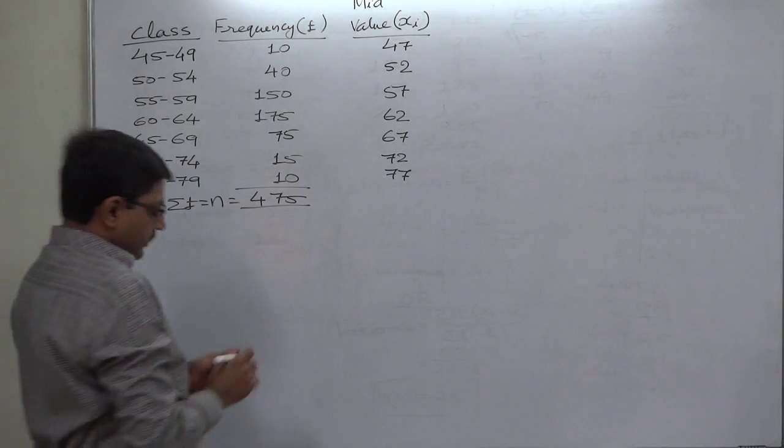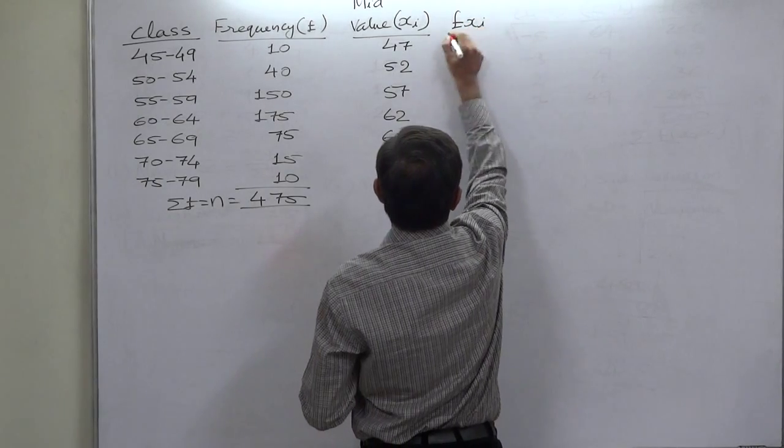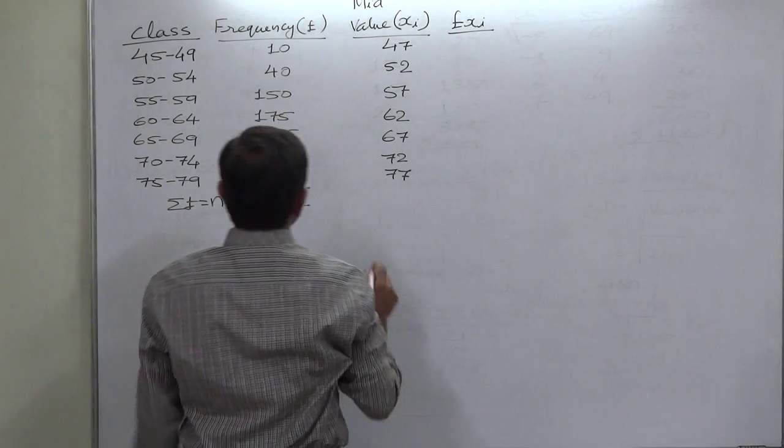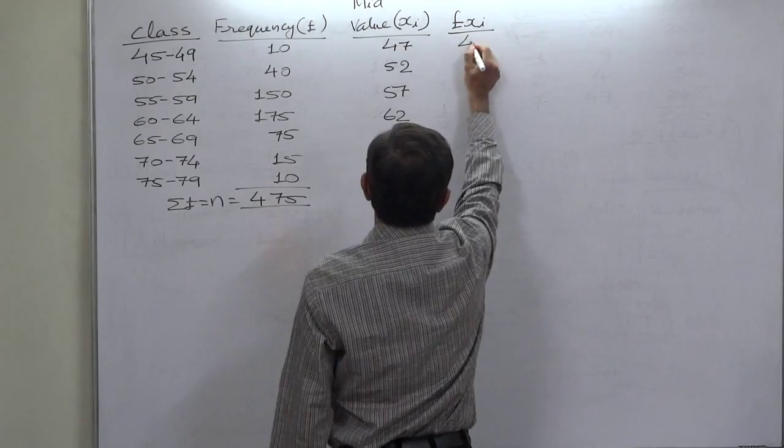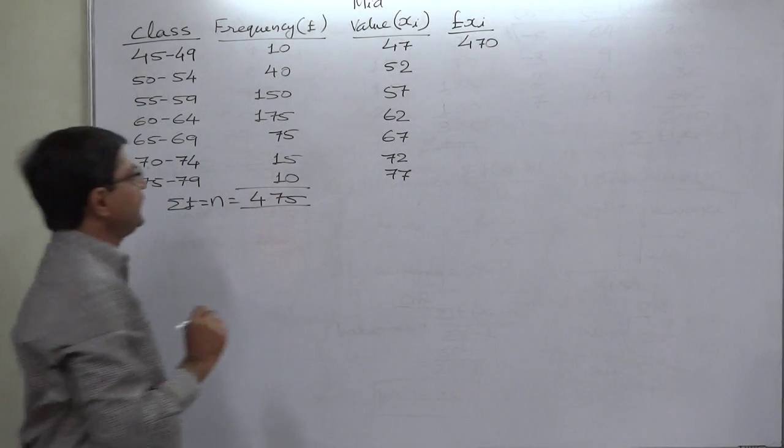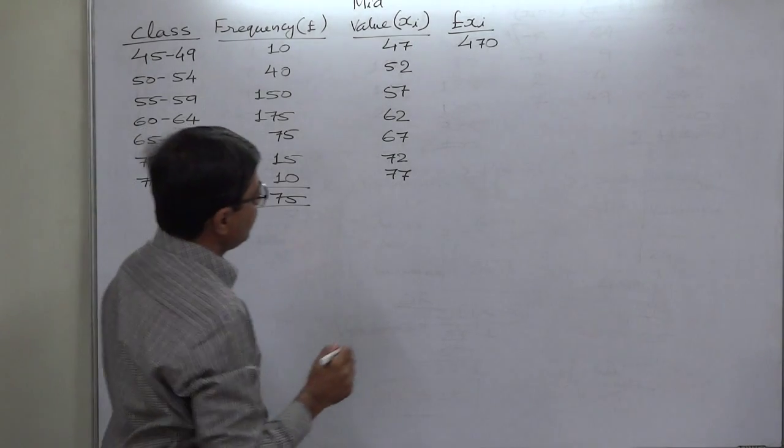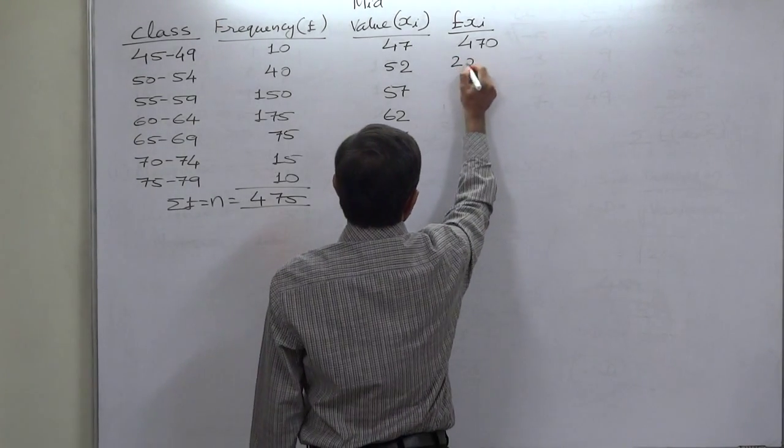To calculate mean we need f into x. 47 multiplied by 10, 470. 52 multiplied by 40, 52 multiplied by 40, 2080.